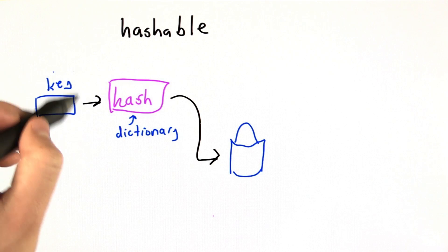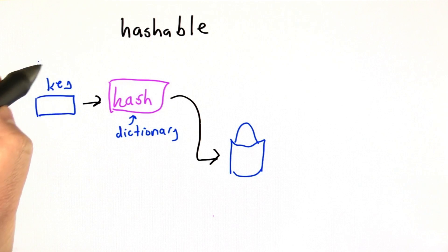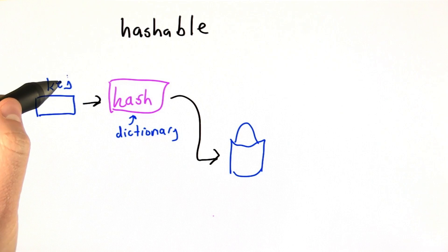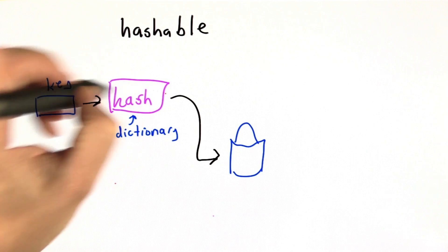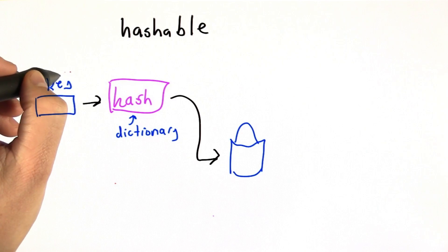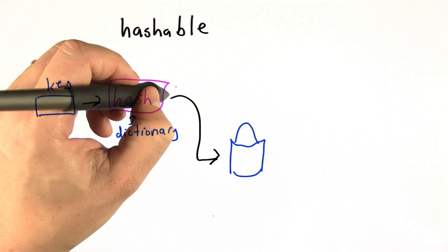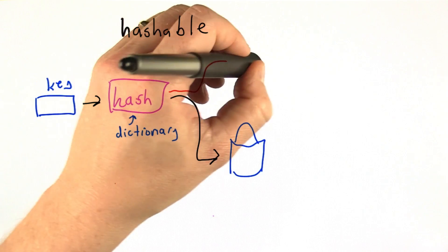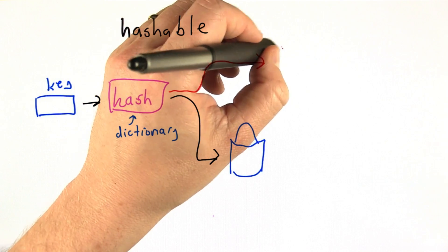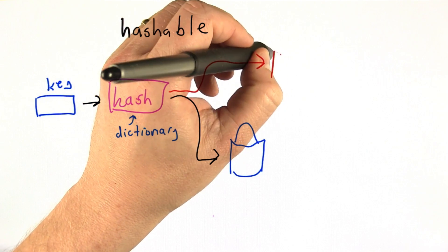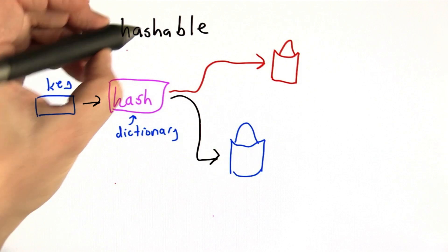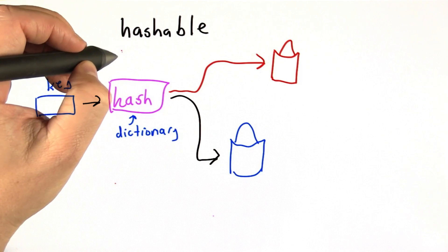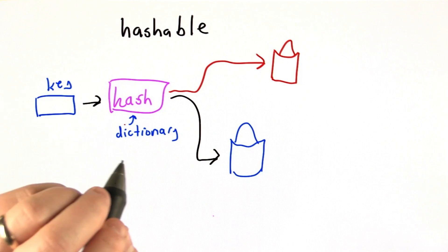If the hash of the key could change — so if the key was something that could be mutated — well, the next time we look it up, if the key has changed, we're going to hash it and we're going to look in the wrong bucket. So that's why things need to be hashable to be put in a dictionary.